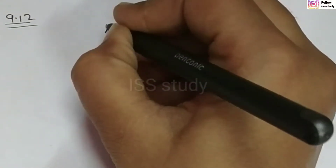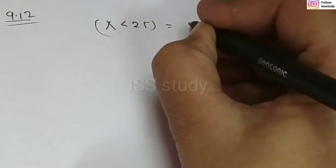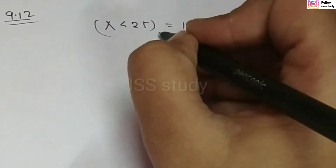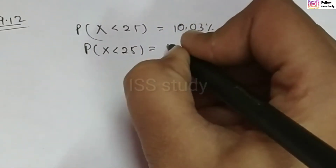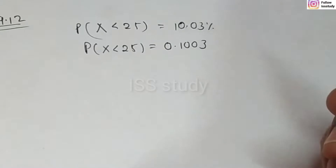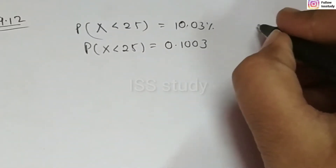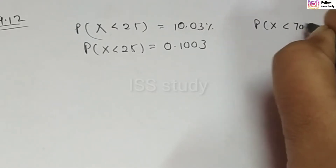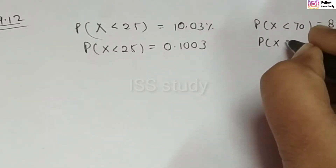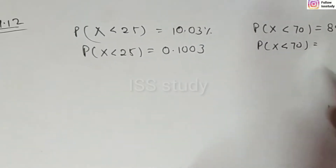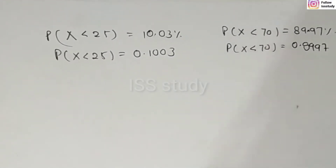We have been given that 10.03% of the items are under 25 kg. We can convert this and write it as: probability that X is less than 25 is equal to 0.1003. Second, we have been given that the items are under 70 kg, so we write: probability that X is less than 70 is equal to 0.8997.